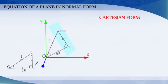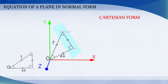Cartesian form of the equation of a plane in normal form. Vector form of the equation of the plane in normal form is vector r dot n cap is equal to d.